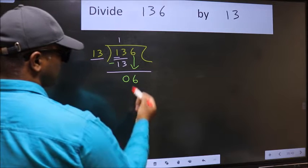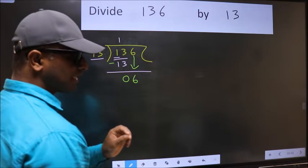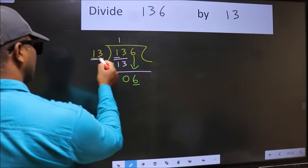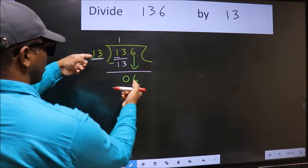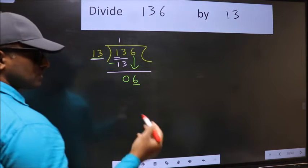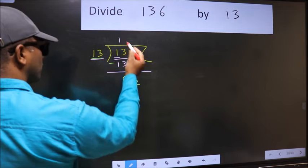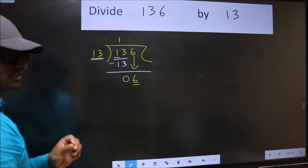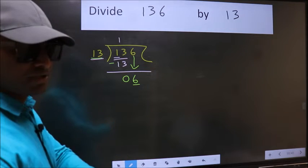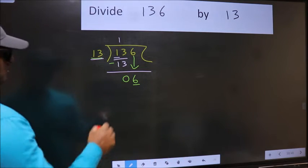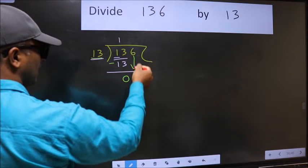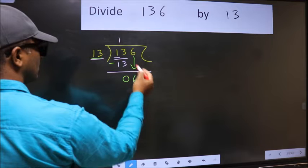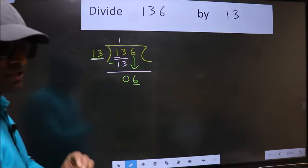After this step, the mistake happens. Here we have 6 and here 13. 6 is smaller than 13. So what many do is, they directly put dot and take 0. Which is wrong. Why is it wrong? Because just now you brought this number down, and in the same step you want to put dot and take 0. Which is wrong.